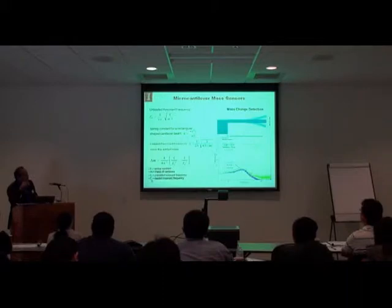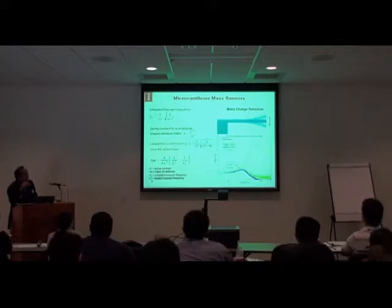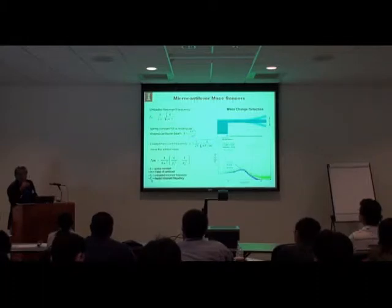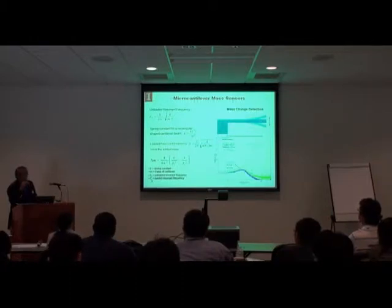The spring constant is a function of Young's modulus, thickness, width, and length. This is the stiffness and this is the mass. The equation assumes the mass is a point mass at the end. The key point is that as the mass increases, the resonant frequency will decrease.